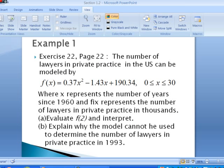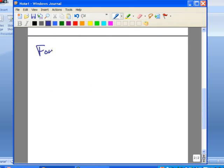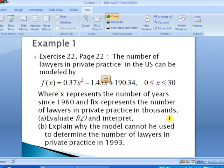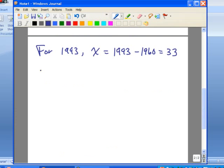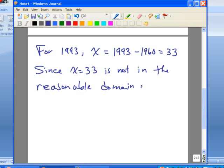Let's take a look at part B. It says, explain why the model cannot be used to determine the number of lawyers in private practice in 1993. For 1993, the corresponding x value would be 1993 minus 1960, that's our starting year, so we get 33. If we look at the reasonable domain of the model, it only goes up to x being 30. It looks like our value here is not in the reasonable domain. Since x = 33 is not in the reasonable domain of f, our model, we cannot use it.